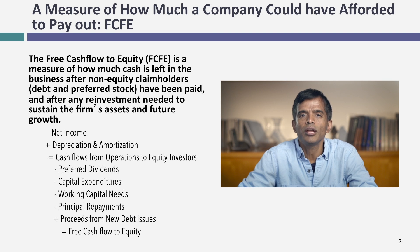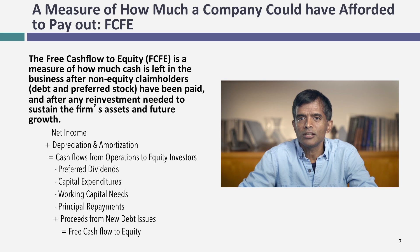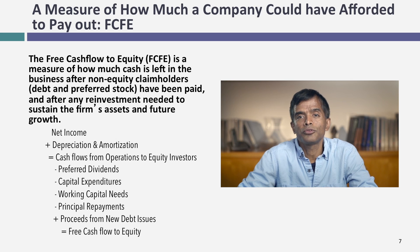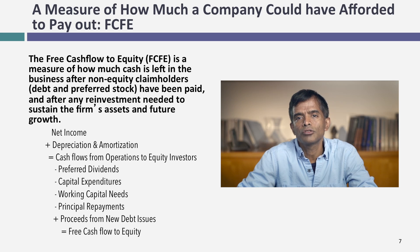Now let's look at how much they could have returned. To measure how much a company can afford to return to its stockholders, I'll use free cash flow to equity. I'm going to look at the cash left over after you've met every conceivable need as a company. I start with net income, then add back depreciation and amortization — because it's an accounting expense, not a cash expense. Then I subtract out every need: capital expenditures, principal payments, and working capital needs. Some of these needs may be covered by new debt issues, which is a positive cash flow. What I'm left with at the end is called the free cash flow to equity.